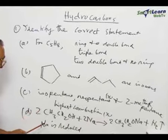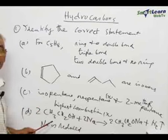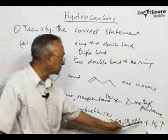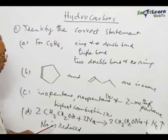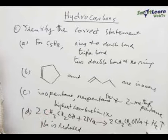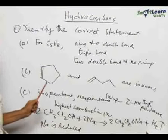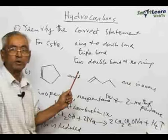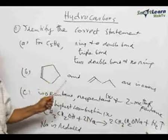The fourth statement: an equation is given where ethyl alcohol reacts with sodium to give sodium ethoxide, liberating hydrogen. In this process, sodium is said to be reduced. These are the four options, out of which we have to find which one or more statements are correct.